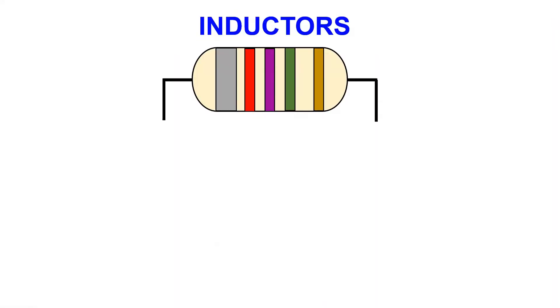Inductors are identified by the silver band as the first band on the component. We calculate them almost exactly the same as resistors with a few small changes.